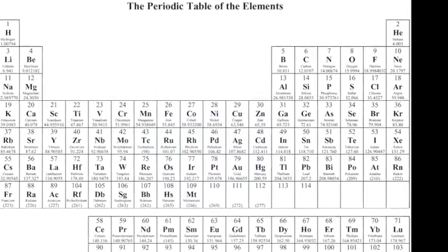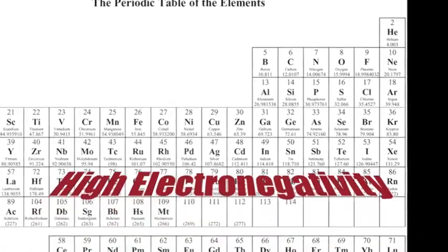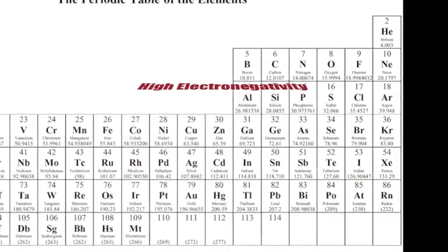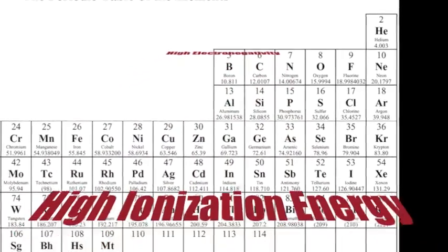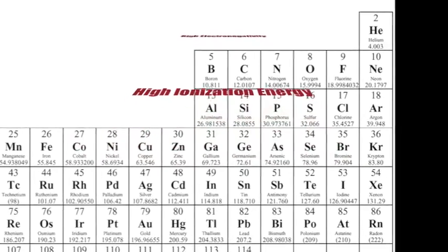The upper right side of the periodic table has high electronegativity. High ionization energy.